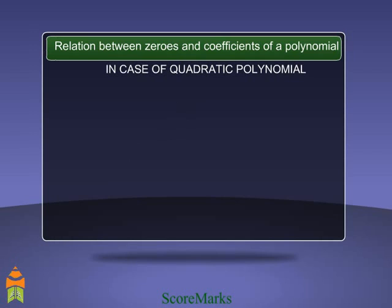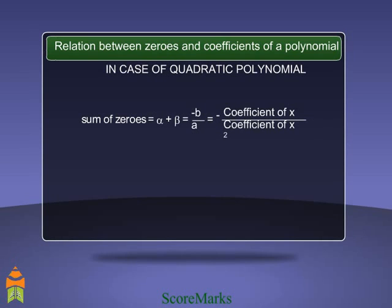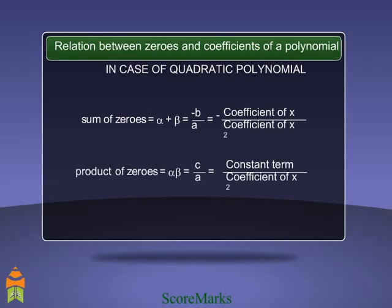In the case of a quadratic polynomial, the general form is ax² + bx + c, and there are two zeros, say alpha and beta. The sum of zeros is equal to minus the coefficient of x upon the coefficient of x squared. The product of zeros is equal to the constant term upon the coefficient of x squared.